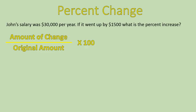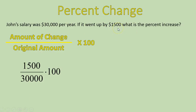John's salary was $30,000 per year. If it went up by $1,500, what is the percent increase? So we're looking for the percent increase in his salary. Our equation is the amount of change over the original amount, and we multiply that times 100. We are given some numbers here. His salary was $30,000 per year, and it went up by $1,500. Those are the numbers that we need. The amount that it changed is given — it increased by $1,500. That's going to go in our numerator.